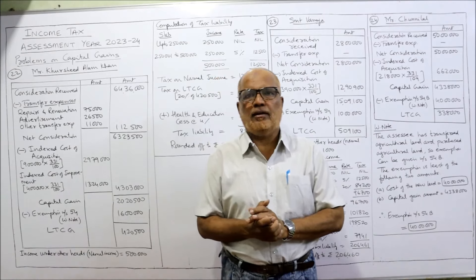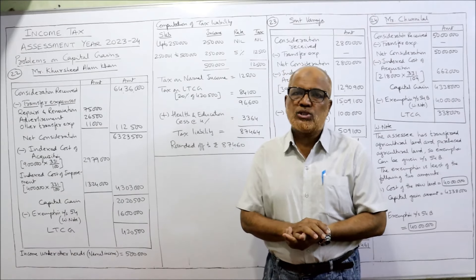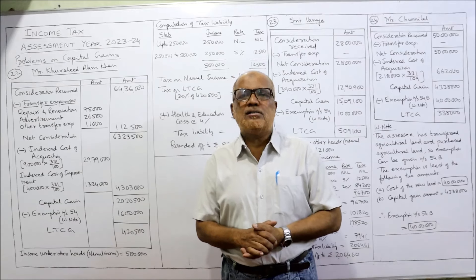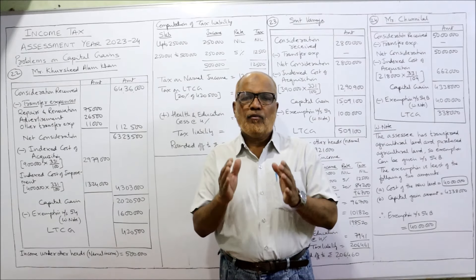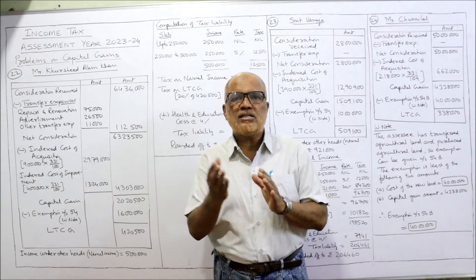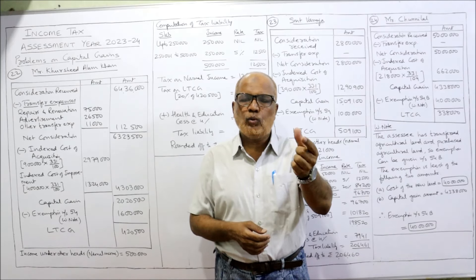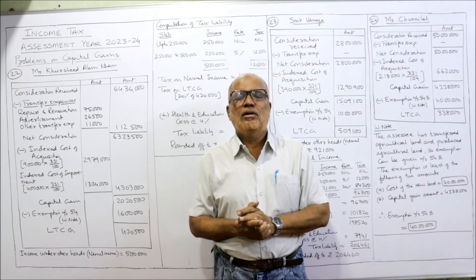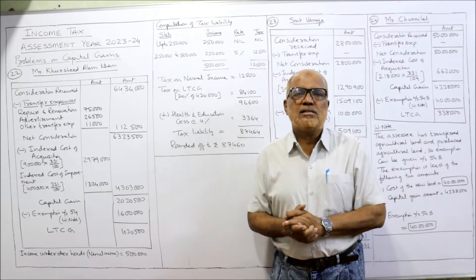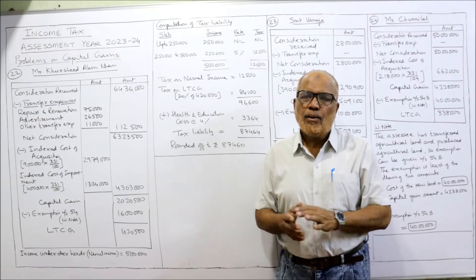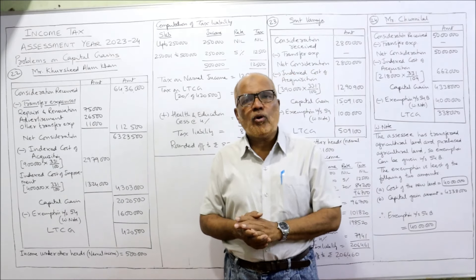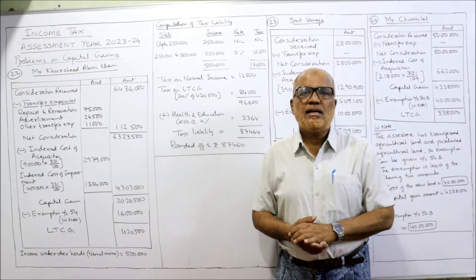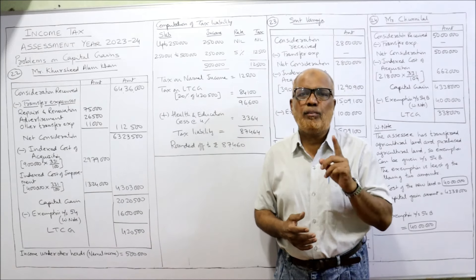Watch all the videos till the end. In the last video I explained exemption under section 54: when an assessee sold one residential house and within the stipulated period of two or three years purchased another residential house, exemption under section 54 is allowed. In this video, one more problem under section 54B — when an assessee can get exemption under section 54B — I am going to explain.